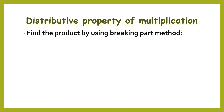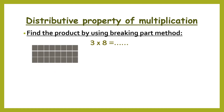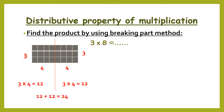We break the larger number. If we have 3 times 8, we go to the larger number, which is 8, and split it. 8 can be 4 plus 4. So we have 3 rows and 4 columns, and 3 rows and 4 columns. Then multiply: 3 times 4 equals 12 and 3 times 4 equals 12. Then add the products: 12 plus 12 equals 24.